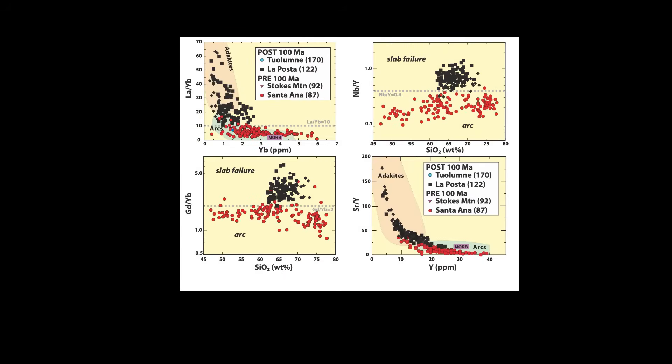Here are some of our diagrams showing the pre- and post-100 million-year suites of the Peninsular Ranges, and here we overlay data from the similar edge rocks of the Sierra Nevada. The 120 million-year Stokes Mountain rocks are exposed along the western edge of the batholith and are only shown on the two diagrams on the right, because we didn't have rare earth element data for the diagrams on the left, whereas the post-100 million-year rocks outcrop farther to the east.